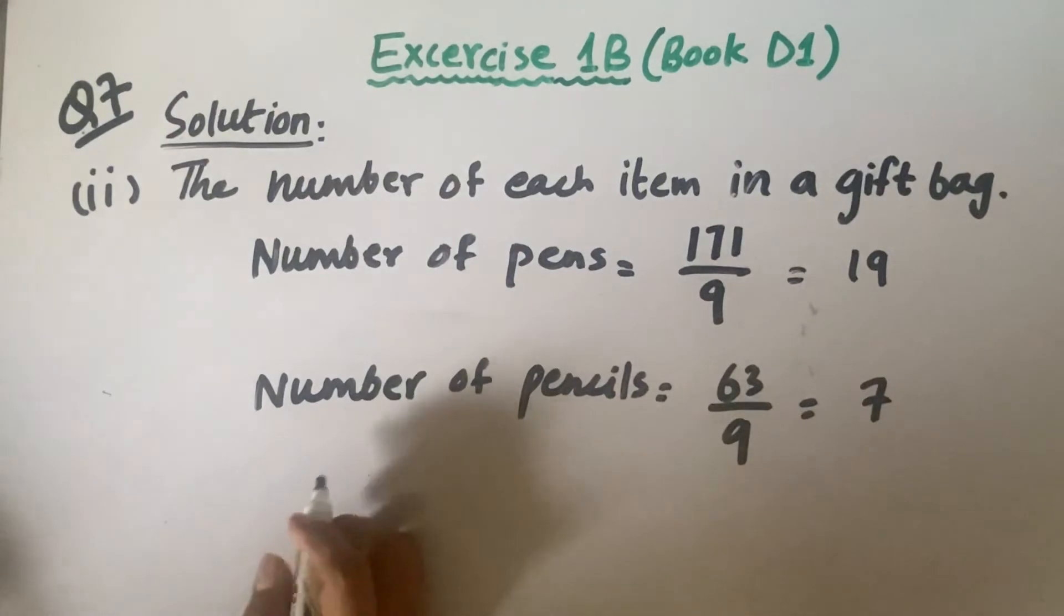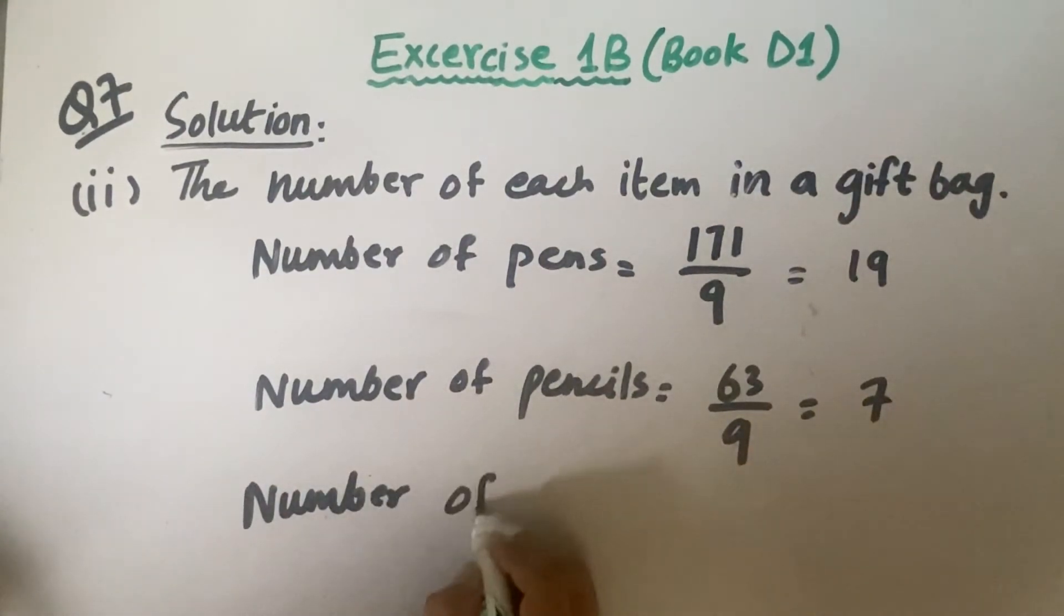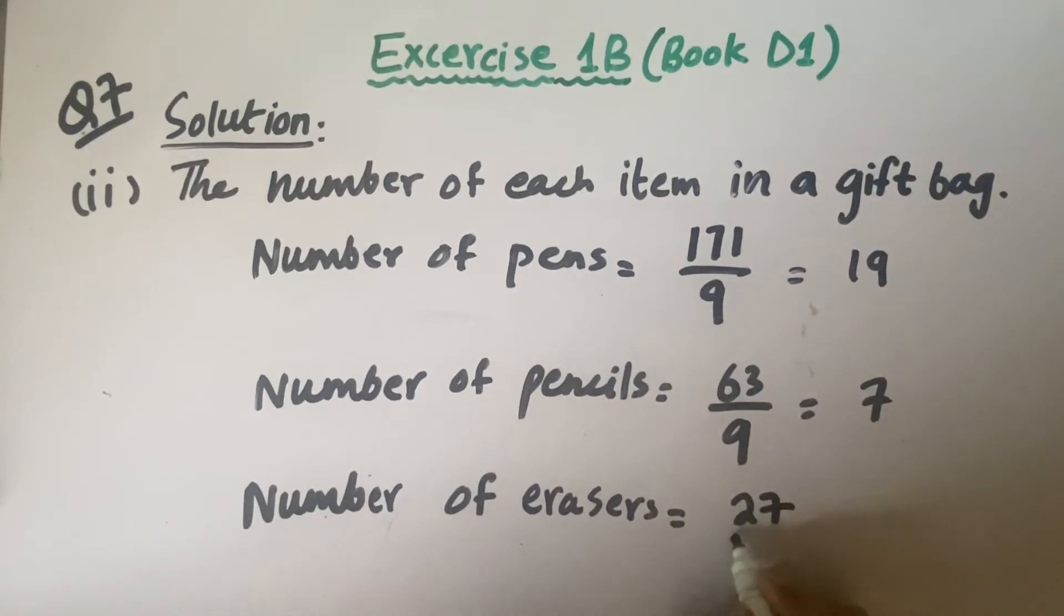And now the number of erasers: the total number of erasers is 27 divided by 9, which equals 3. So each bag contains 19 pens, 7 pencils, and 3 erasers.